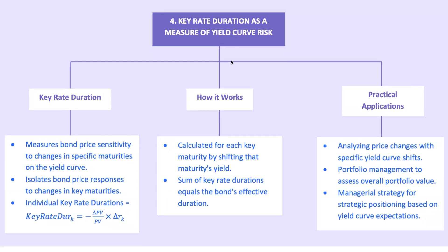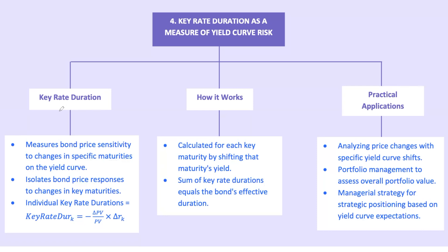Now it's time to explore something more specific and powerful: key rate duration (KRD). Think of key rate duration as your precision tool for measuring bond price sensitivity — not just to parallel shifts in interest rates, but to changes at specific points along the yield curve. If you're managing a bond portfolio, you don't always expect the yield curve to move uniformly up or down. Sometimes short-term rates might spike while long-term rates barely budge. Key rate duration measures the risk of these non-parallel shifts — it's all about zooming in and seeing how a bond or portfolio responds to changes at each key maturity point on the curve.